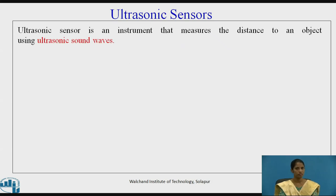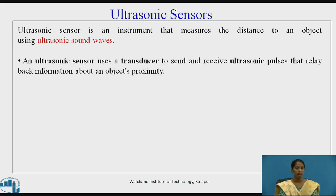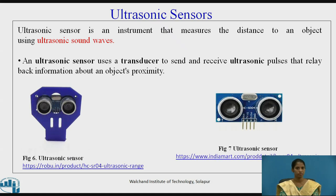Ultrasonic sensors. An ultrasonic sensor is an instrument that measures the distance to an object using ultrasonic sound waves. It uses a transducer to send and receive ultrasonic pulses that relay back information about an object's proximity. Figures 6 and 7 show ultrasonic sensors.